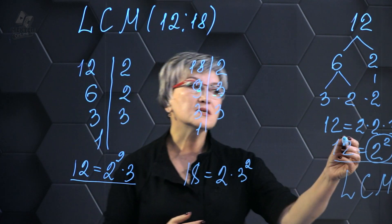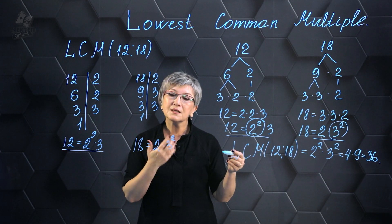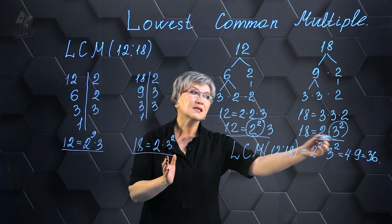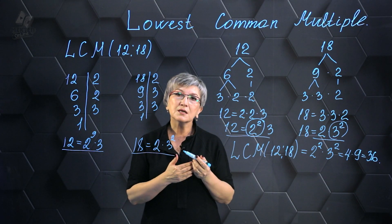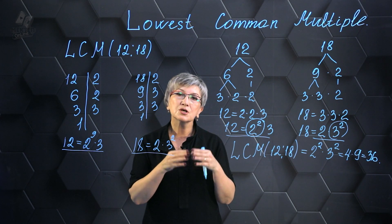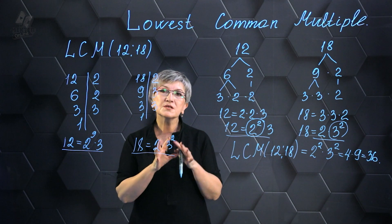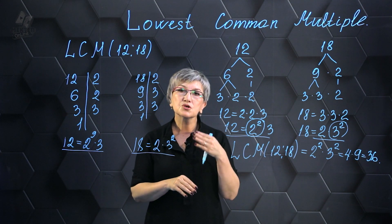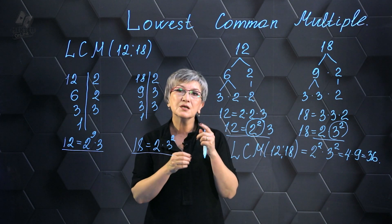And pay attention, this entry and this entry are one and the same. This entry and this entry are also one and the same. This is how you find the least common multiple. We'll go over this method together. You'll see it's a practical method for finding the least common multiple.